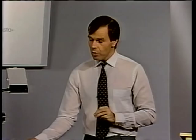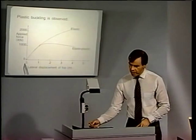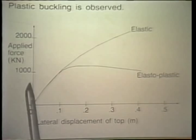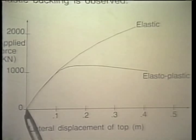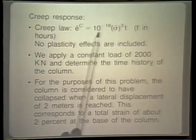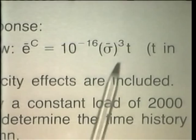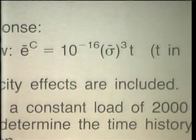The elastic response, using second Piola-Kirchhoff stresses related to Green-Lagrange strains, is shown with applied force versus lateral displacement at the top of the column, with the Euler buckling load indicated by a blue line. The elastoplastic analysis with strain hardening modulus equal to zero (perfect plasticity) gives the large-displacement collapse response. For creep, we use a power creep law with time exponent equal to 1, working with effective quantities — effective creep strains and effective stresses. Plasticity effects are not included in this creep analysis.